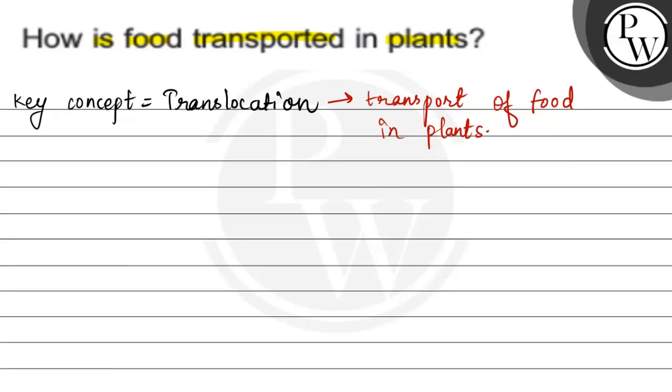How is food transported? First thing is, food is transported with the help of conducting tissue, which means phloem. And the process by which this transport takes place is known as translocation.